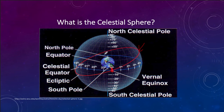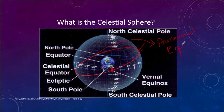On the other side you'd have the autumnal equinox, which would be the first day of fall — when the sun crosses the celestial equator heading south instead of heading north. So those are some definitions of the different terms related to the celestial sphere.